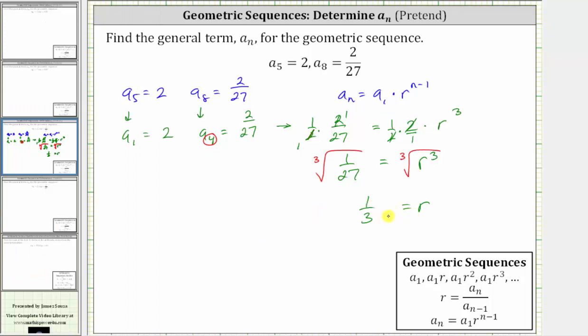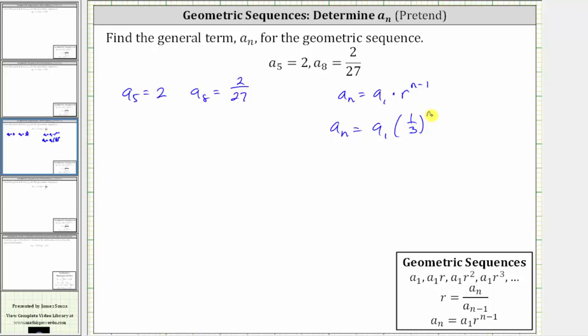Now that we know r is equal to 1/3, we will substitute 1/3 for r in our equation for a_n. Again, we now know that a_n is equal to a_1 times 1/3 raised to the power of n minus 1.